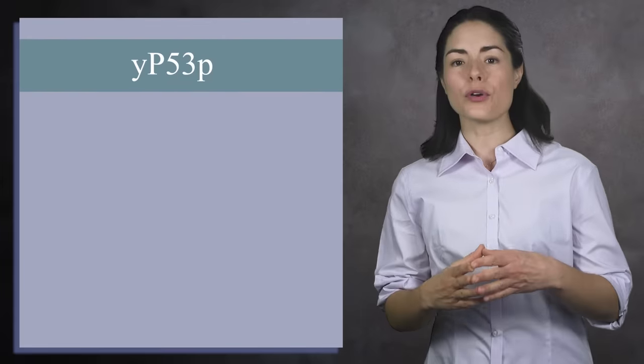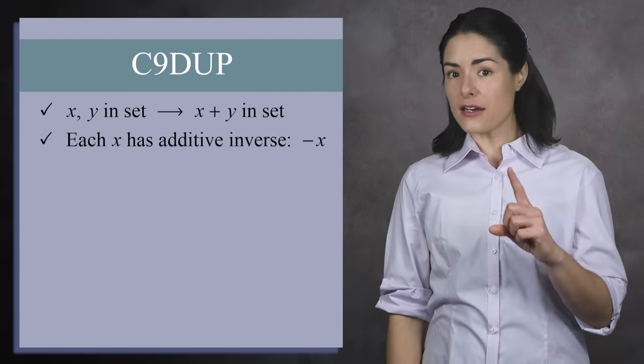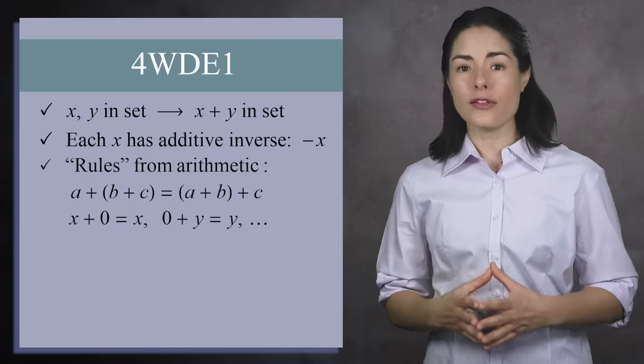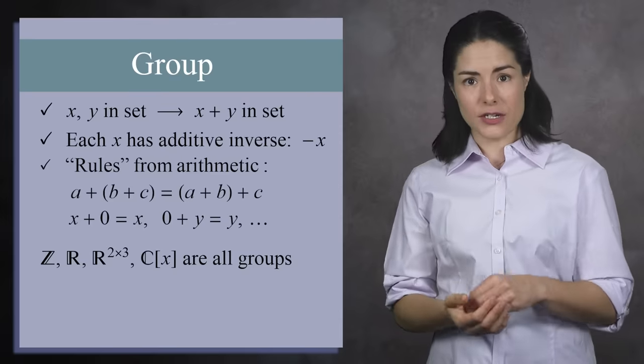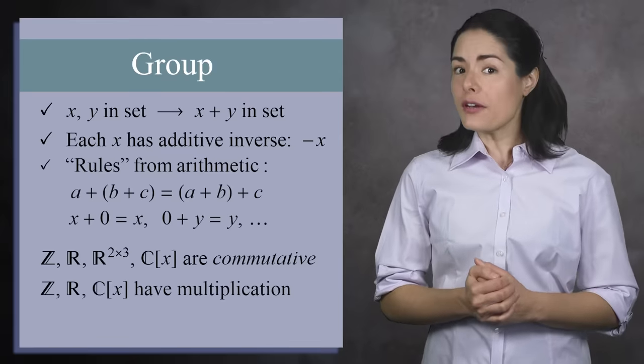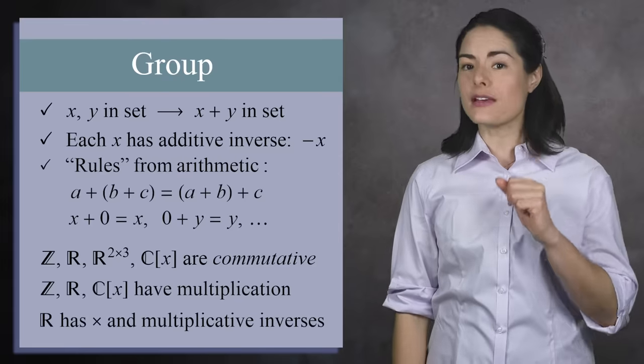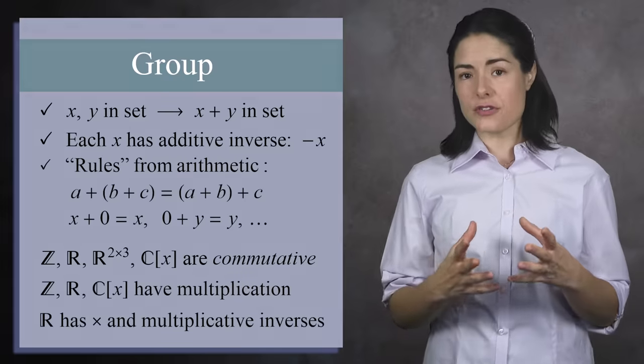We already have a word for a set where you can add any two elements. Every element has an additive inverse, and you have the required rules from arithmetic. We call this a group. So in our four sets, all four are groups under addition. Better still, they are all commutative groups. But three of them also have multiplication, and one of them has multiplication with multiplicative inverses. We need names to describe sets with these additional features. When a commutative group under addition also has multiplication, we call it a ring.